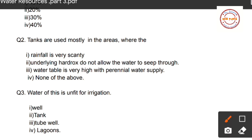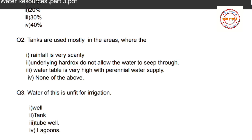Question number two: Tanks are used mostly in areas where — first option: rainfall is very scanty; second option: underlying hard rocks do not allow water to seep through; third option: water table is very high with perennial water supply; fourth option: none of the above. The correct option is number two — underlying hard rocks do not allow water to seep through.